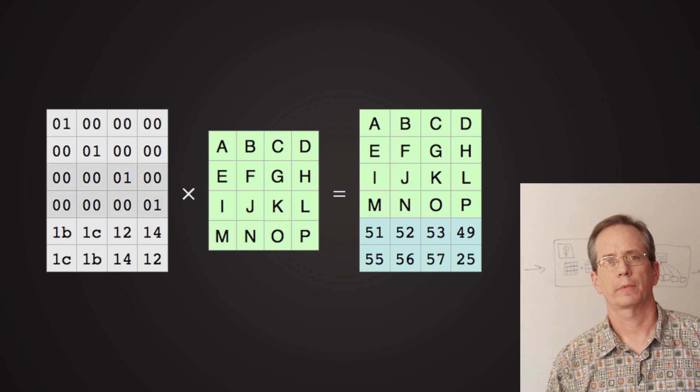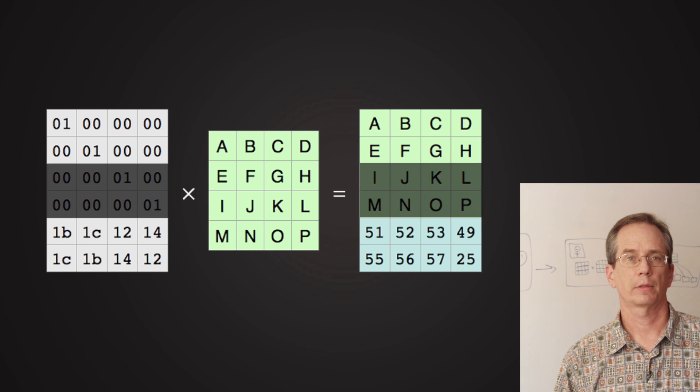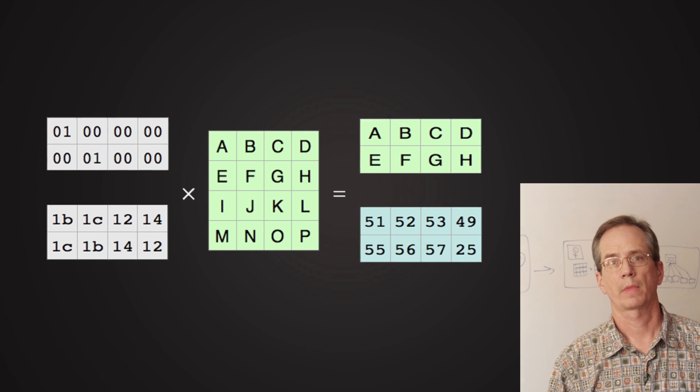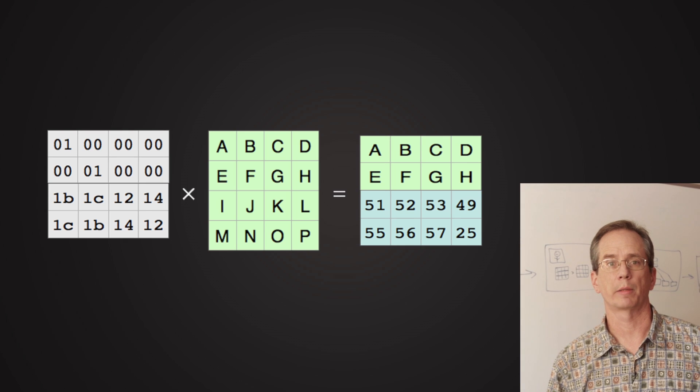Now the next question is, if you have a couple servers down for maintenance, how do you get your data out of the system? You've got two of the original data shards and the two parity shards. How do you do the calculation to get them back?